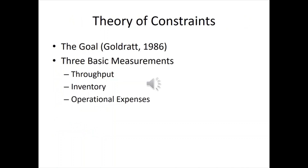In 1986, a guy named Goldratt wrote a book called The Goal, and he realized there were bottlenecks within processes. He said there are three measurements: throughput, inventory, and operational expense — and you want to maximize these in dollars. If you haven't read The Goal, I'd recommend it — it gives a fundamental understanding of the theory of constraints, eliminating the constraints on value flow.